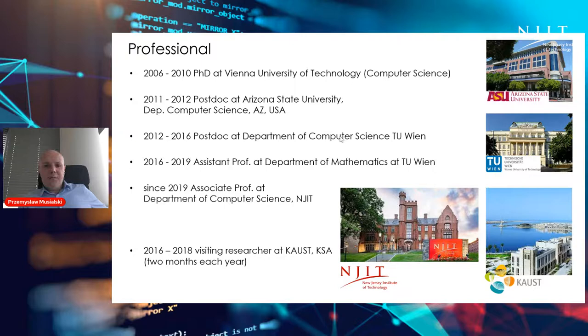A few words about my person. I did my PhD in 2010 in Vienna University of Technology. I was postdoc at ASU, postdoc at Vienna again, assistant professor in the department of mathematics, and since 2019 I'm associate professor at the department of computer science here at NJIT. This is all, this is the talk about my current and recent research. Thank you very much and I hope you enjoyed it.